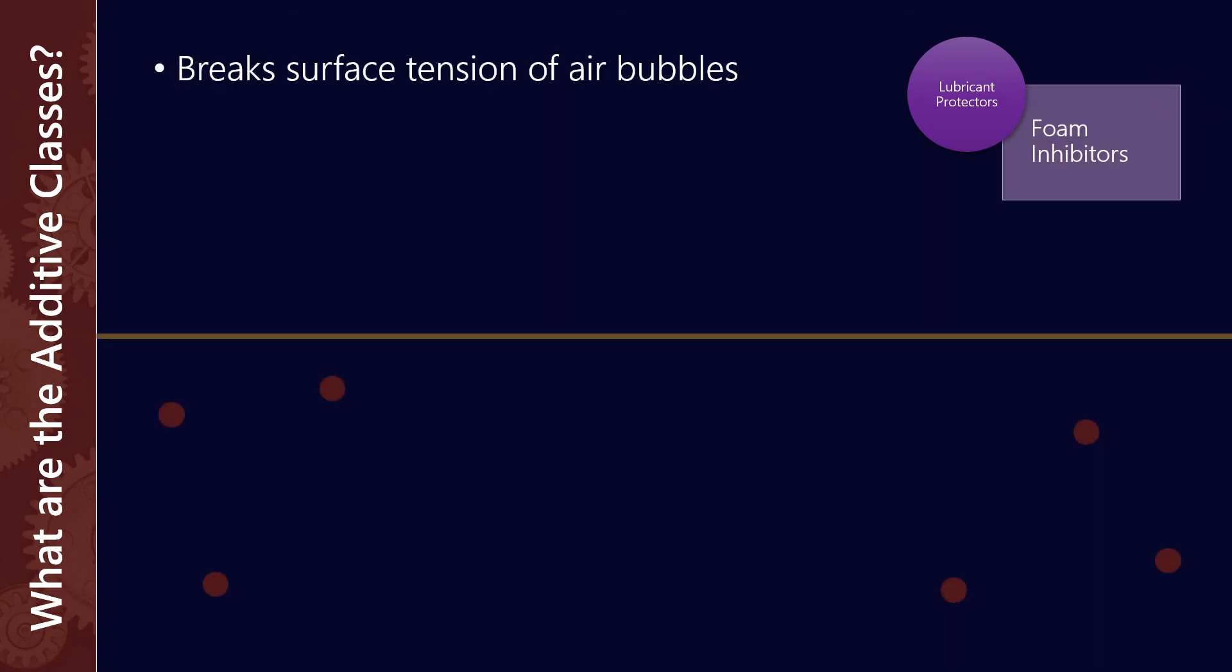Lastly, we've got foam inhibitors. Foam inhibitors are a really interesting class of additive, and what they help do is break the surface tension of air bubbles. Let's say an air bubble forms and rises to the top—to the surface of the lubricant. These foam inhibitors will bond to the surface of the bubble. This additive class has really low surface tension, so what happens at the surface is that it stretches out such that it's really thin, and eventually that helps break the surface of the bubble and the bubble pops.